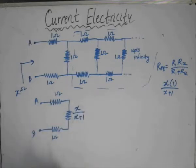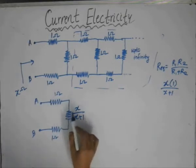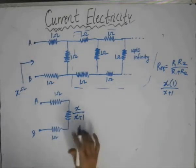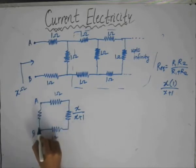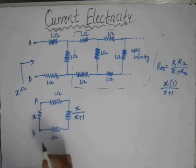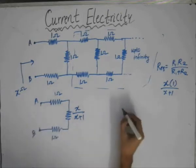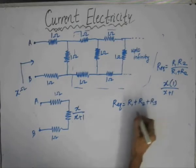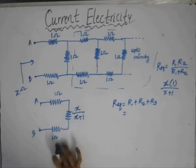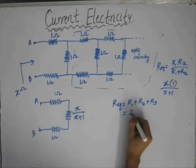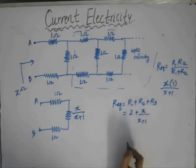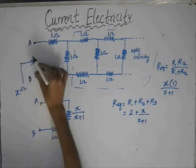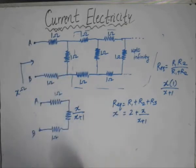This resistor x/(x+1) and the two 1 ohm resistors are connected in series. So the equivalent value of resistance here would be R1 plus R2 plus R3, which is 1 ohm plus x/(x+1) ohm plus 1 ohm, giving 2 plus x/(x+1). This is the equivalent resistance between points A and B. But we have already seen that the equivalent resistance between points A and B is also x ohm, so the LHS is equal to x ohm.